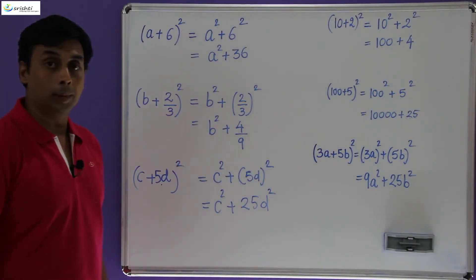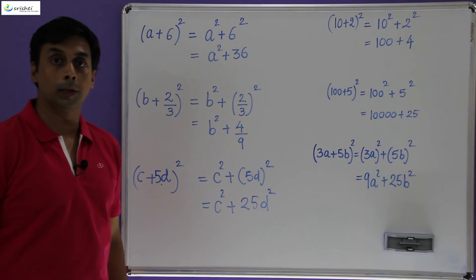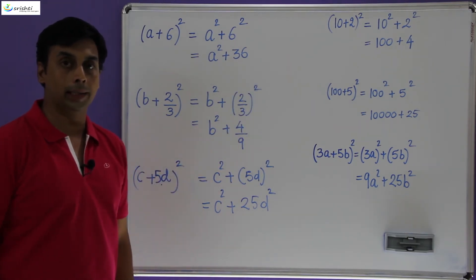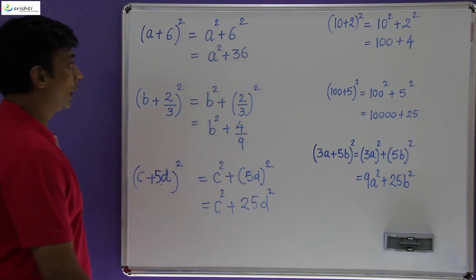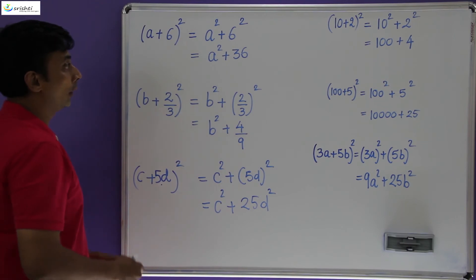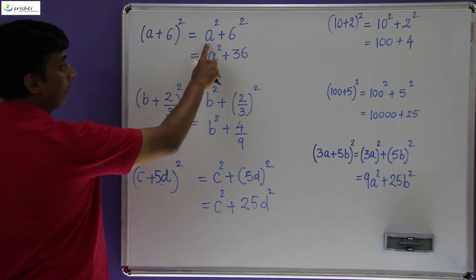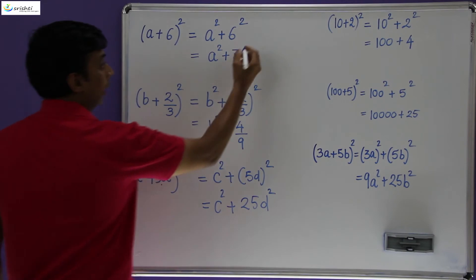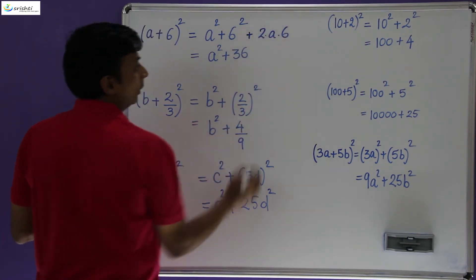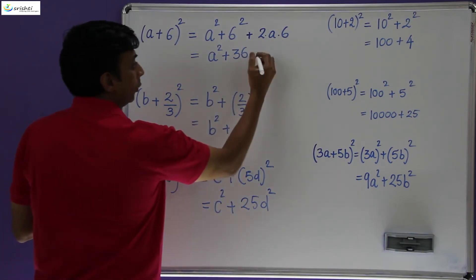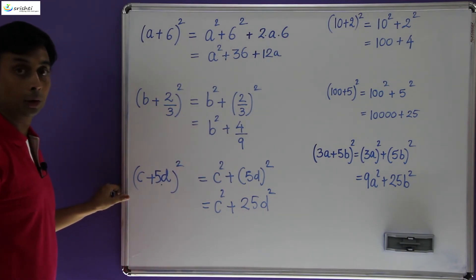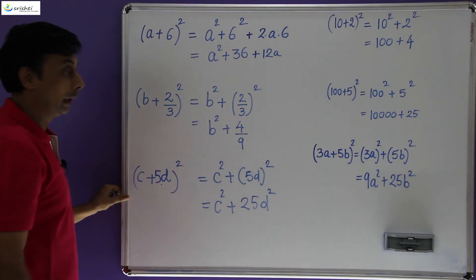On the board I have written six problems where (a + b)² was written as a² + b². We are going to complete this identity by rectifying the mistake. The missing term was 2ab and we are going to introduce it. So (a + 6)² was written as a² + 6², and now we need to add 2ab: 2 × 6 = 12, so this becomes + 12a. Now this expansion is absolutely accurate.